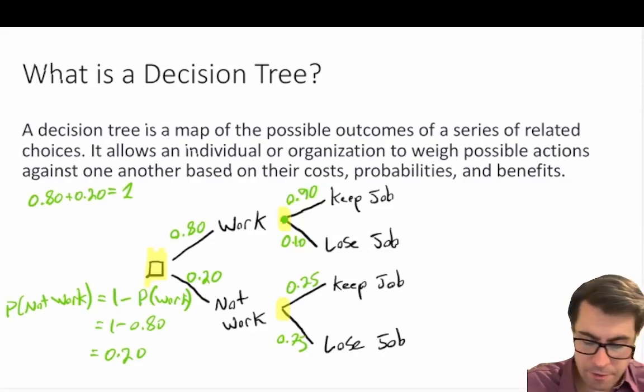And from there we have a relatively well-constructed probability tree. Now we can do a couple of interesting things with decision trees to find out the probabilities of each event occurring.